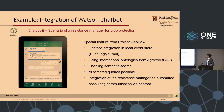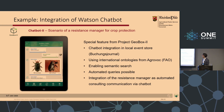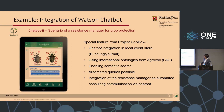One example is the integration of the Watson chatbot. You can see we have a scenario of a resistance manager for crop protection integrated in our GeoBox application. It is a special feature because we are using the international ontologies from the FAO, enabling semantic search on it. Automated querying is possible, and you can see how we assist with a chatbot.